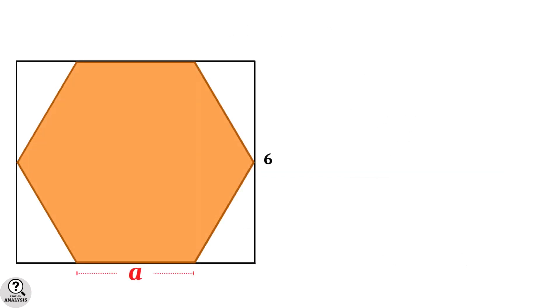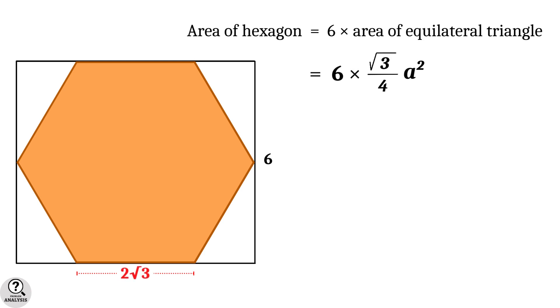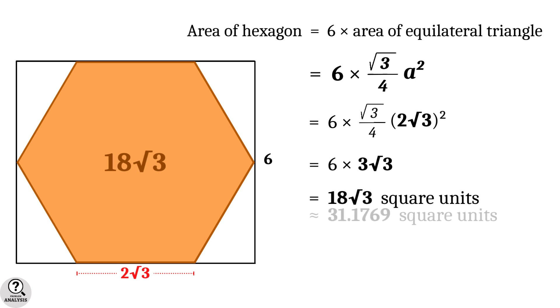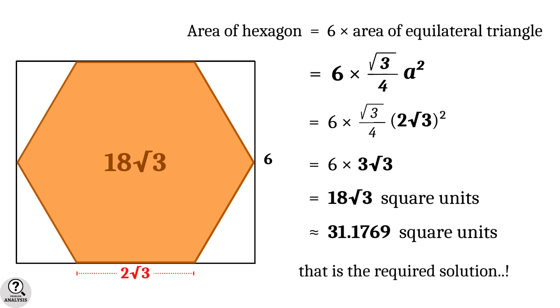That's it. We already know that the formula for finding the area of hexagon equals 6 times √3/4 times a², where a is the side length of the hexagon, which we got as 2√3 units. Substitute this value. Then we get area of hexagon = 6 times 3√3 = 18√3 square units. This value is approximately equal to 31.1769 square units. And that is the solution we are looking for.